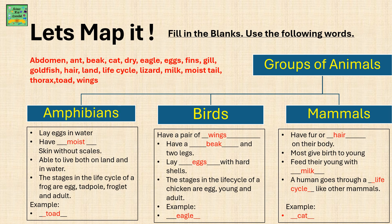Mammals. They have fur or hair on their body. Most give birth to young ones. They feed their young with milk. A human goes through the same life cycle as other mammals. For example, a cat.